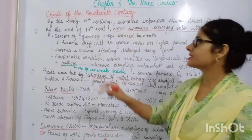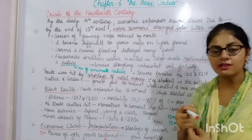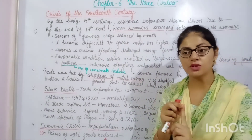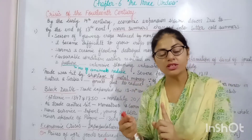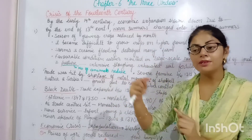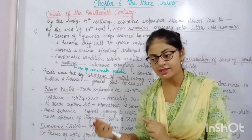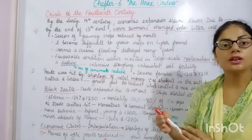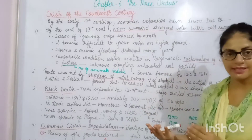So the first crisis of the 14th century was the change in climatic condition — from warm to cold. Because of this cold climatic condition, crop production reduced due to various reasons.